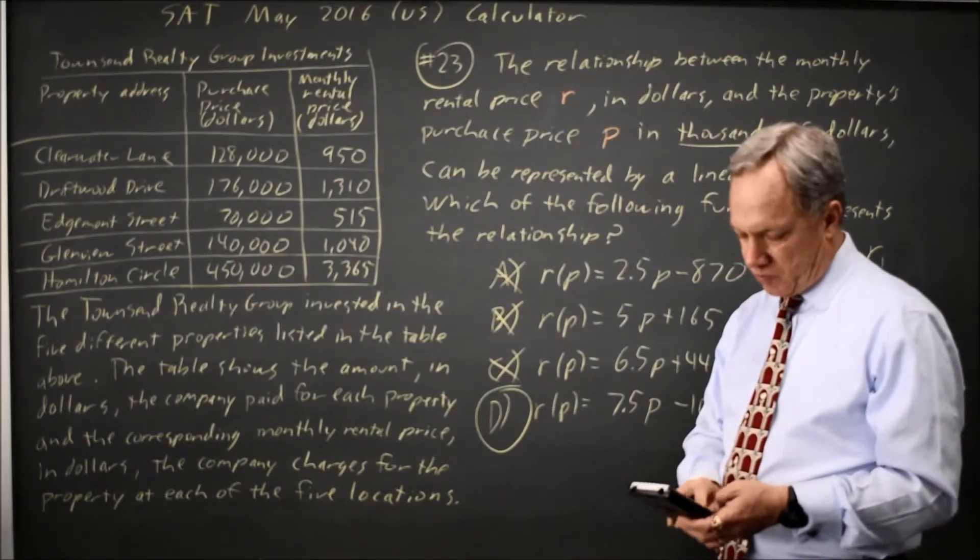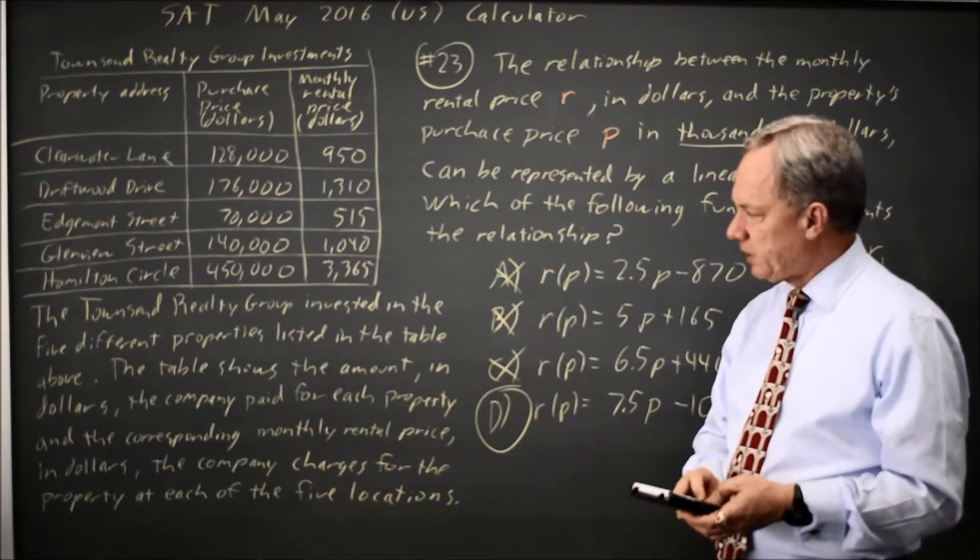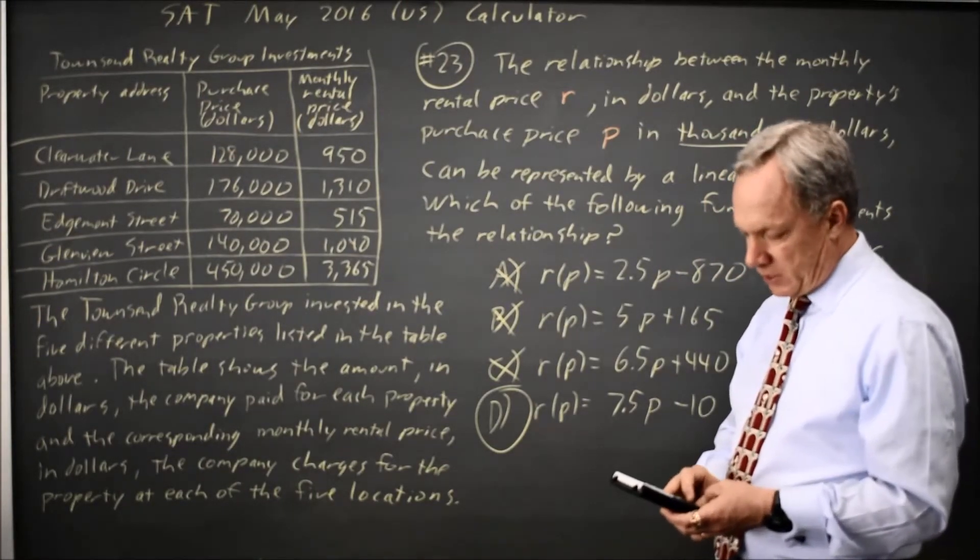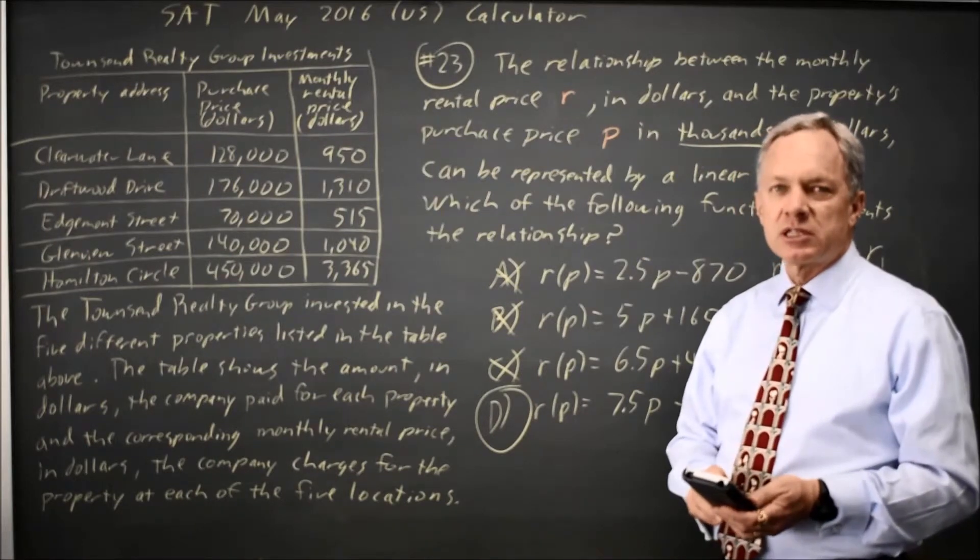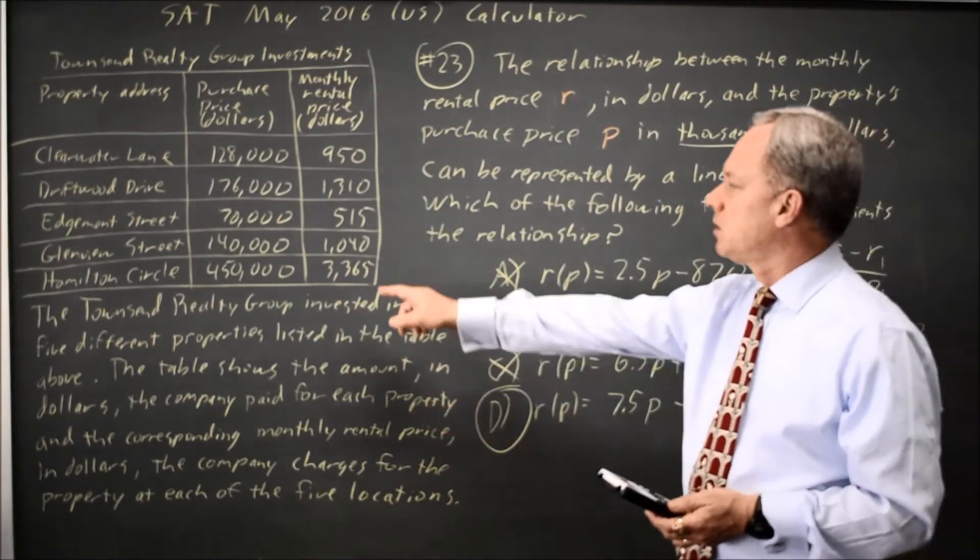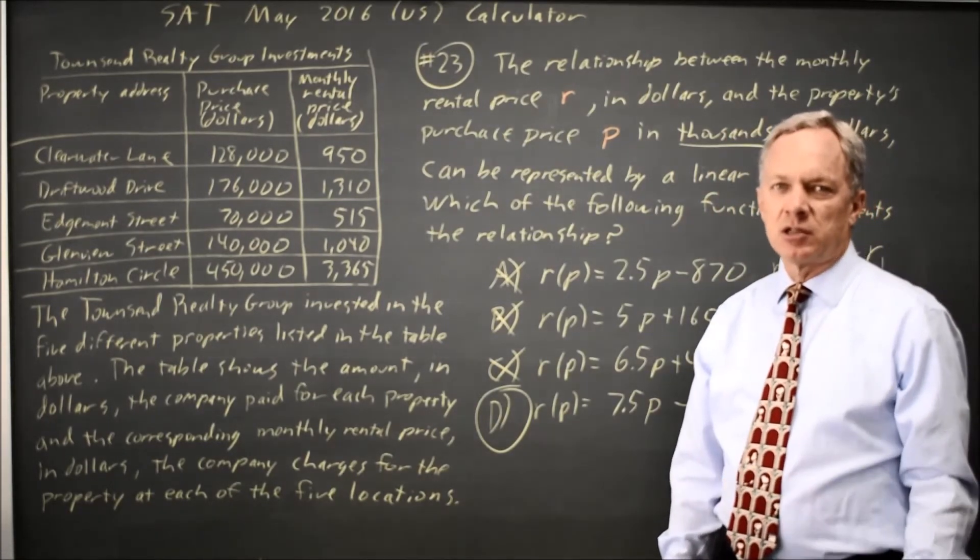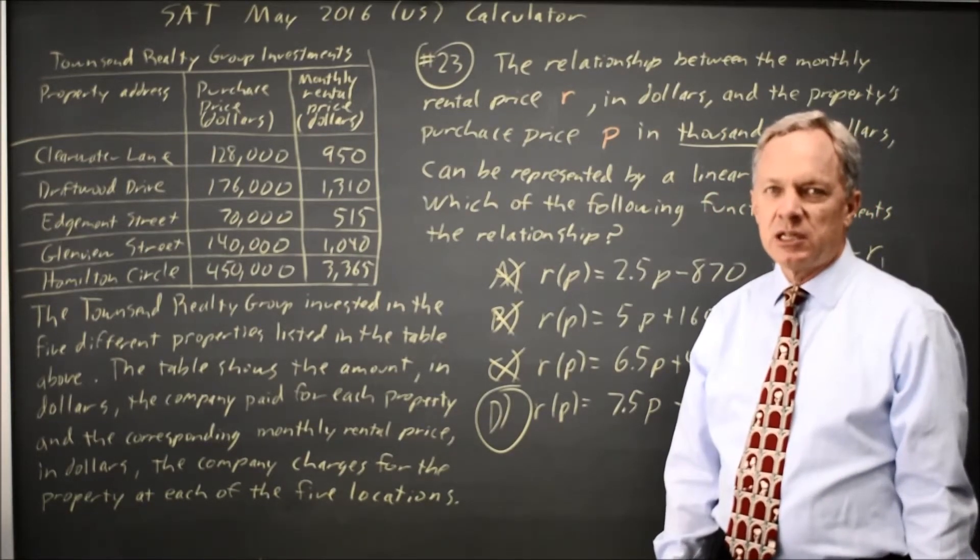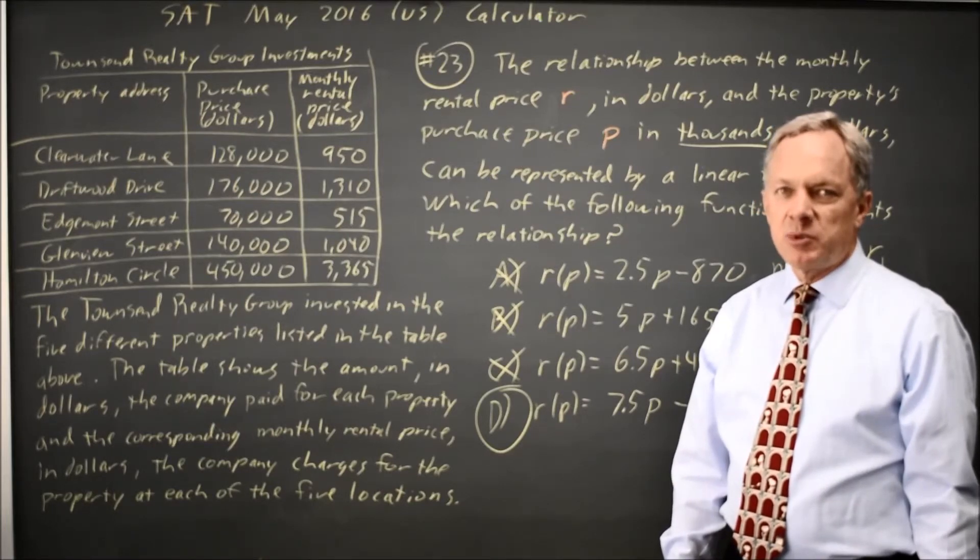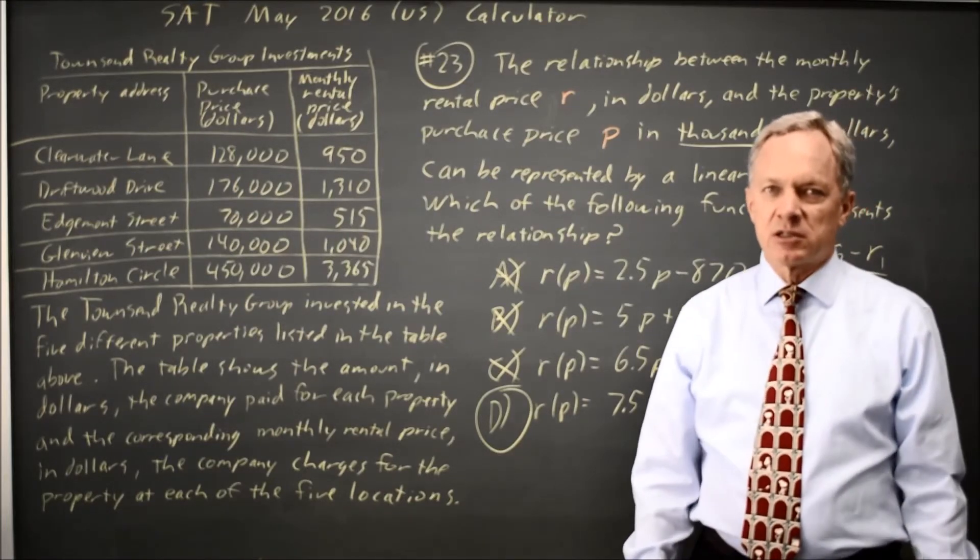So choice D is 7.5 times 450 minus 10 gives me 3365 which matches the monthly rental price in the table. So choice D is the only one that fits that point and that means it's the only one that could be correct so that would be my answer.